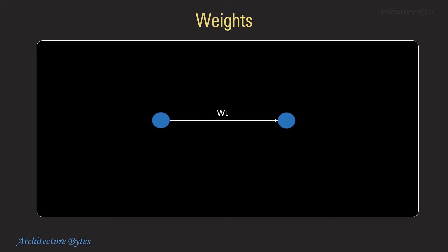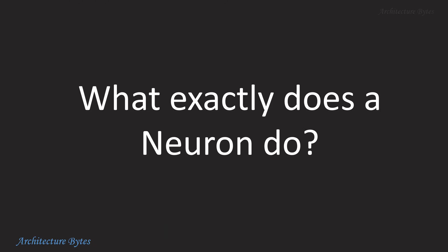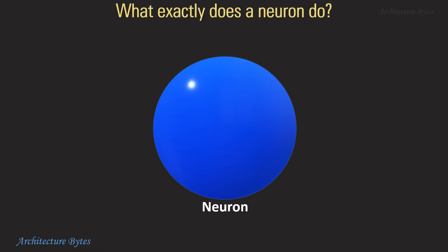The weight determines how much the output of one neuron influences the other neuron. Let's understand what goes on inside a neuron.